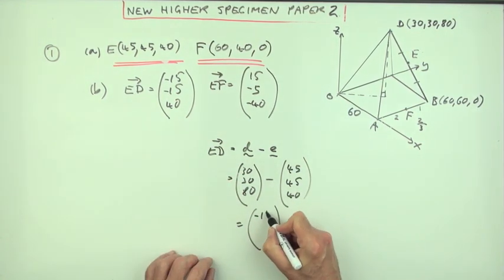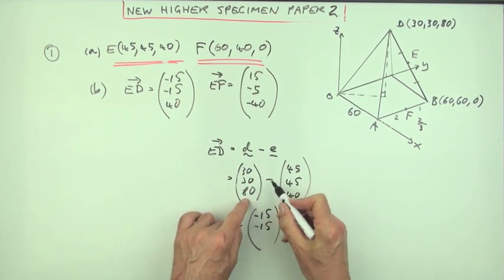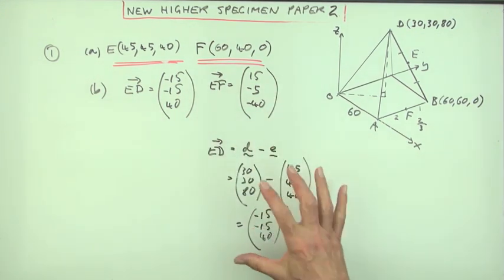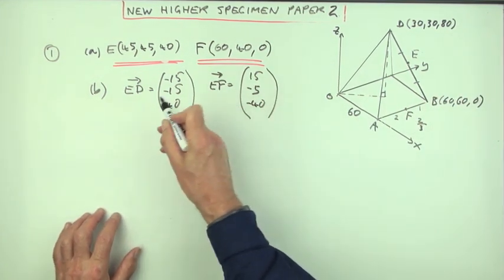Now, let's do the subtraction. 30 take away 45, negative 15. 30 take away 45, negative 15. 80 take away 40, 40. For the same result, obviously. But the point is, it's only worth one mark. You're going to write all this down for one mark. It takes far too long just for the one mark. You could just stick with that.